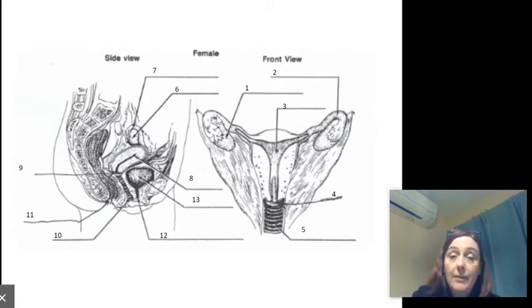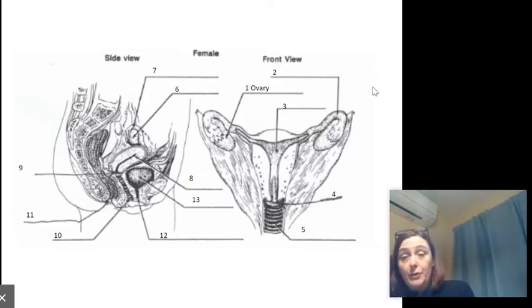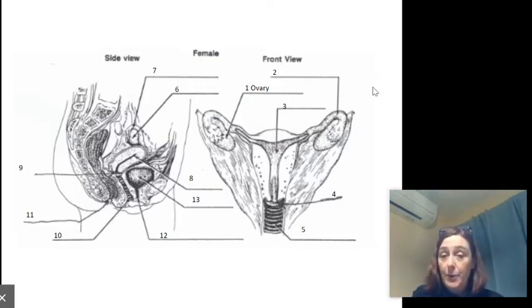Eggs are made right here in number one. There's one over here and there's one over here, those are the ovaries. Ovaries make eggs, they also make estrogen and progesterone. Just like the testes made sperm and the hormone testosterone, the ovaries make the gamete egg or ovum and two hormones, estrogen and progesterone, that control the reproductive cycle.